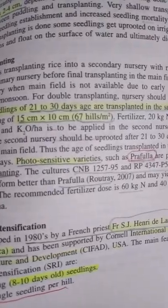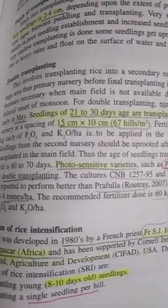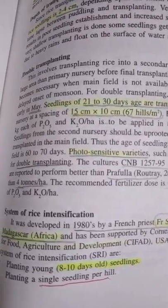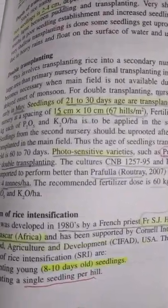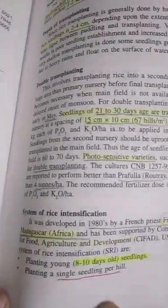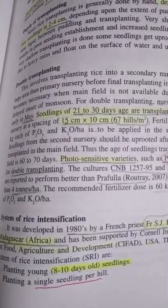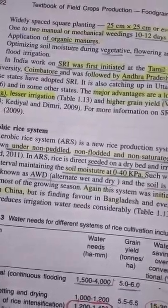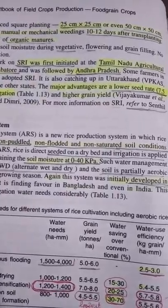In double transplanting, photosensitive varieties like Pruffle are preferred — please remember, this is a very important variety. What is SRI? SRI was discovered in 1983 by Henri de Laulanié in Madagascar, at CIIFAD — Cornell International Institute for Food and Agriculture. In SRI, 8 to 10 days old seedlings are transplanted, with planting of a single seedling per hill, in a square planting pattern of 25 × 25 cm, with 1 to 2 manual or mechanical weedings 10 to 12 days after transplanting, and application of organic manure, optimizing soil moisture during vegetative, flowering, and grain filling stages.